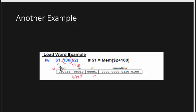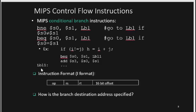In the branch instruction format, $1 is the destination and its binary representation goes in RT. $2 is the source and its binary representation goes in RS. The immediate field contains the offset, so the offset here is 100.